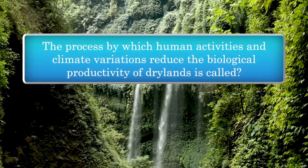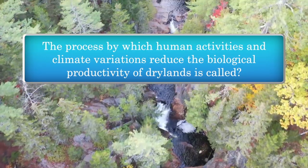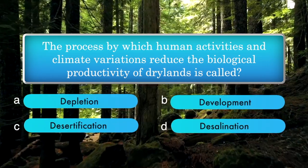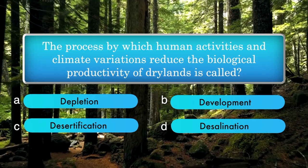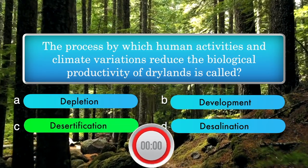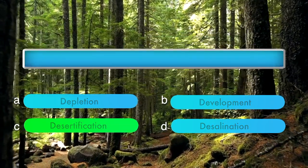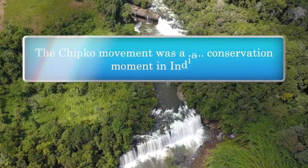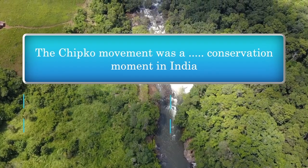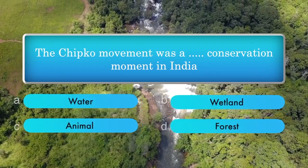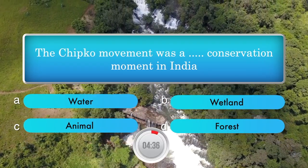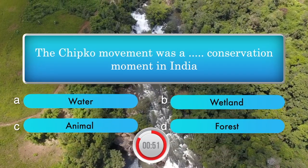The process by which human activities and climate variations reduce the biological productivity of dry lands is called — options: depletion, development, desertification, desalination. Answer is desertification. The Chipko movement was a forest conservation movement in India. Answer is forest.